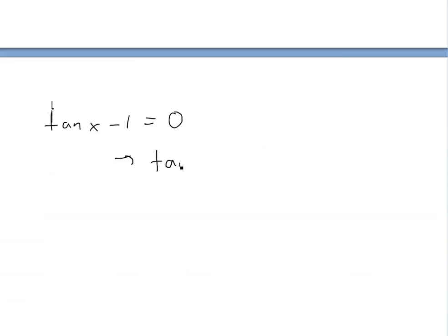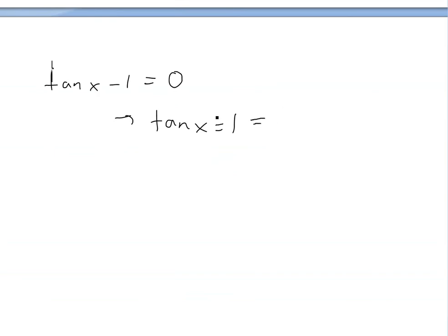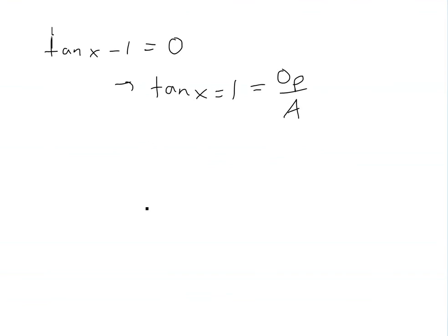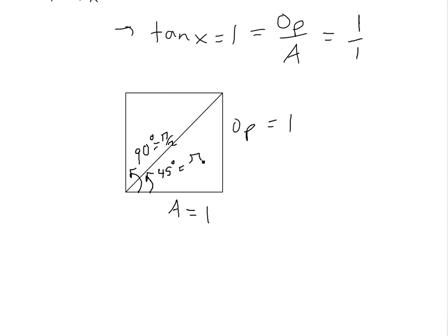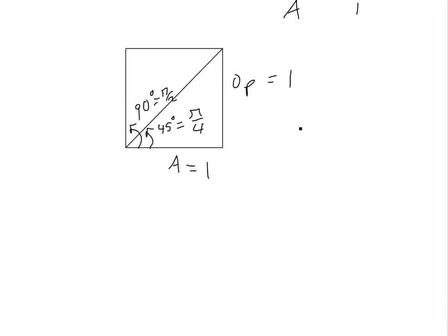So we need tan x minus 1 equals 0, which means tan x equals 1. The definition of tan x is opposite over adjacent, or sine over cosine. If the ratio equals 1, that means opposite equals adjacent, so we have a square triangle where both legs equal 1. The right angle is 90 degrees or pi over 2, and the angle we want is half of that — 45 degrees, or pi over 4.